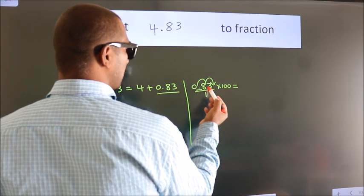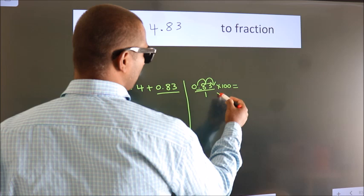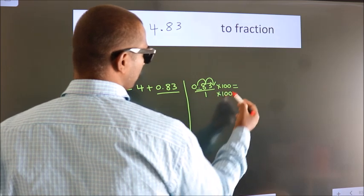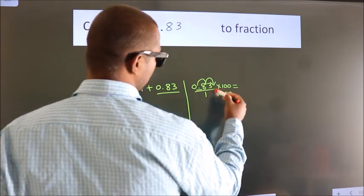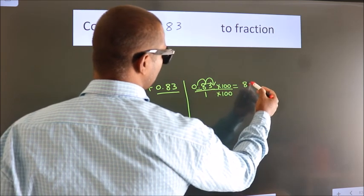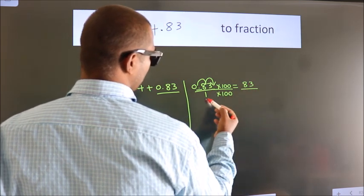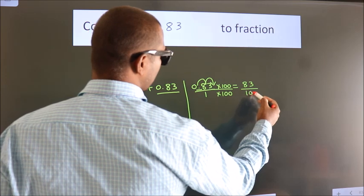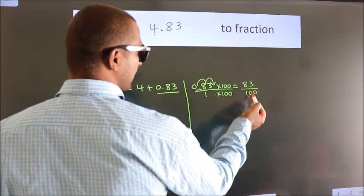Whatever you are multiplying in the numerator, in the denominator also do the same. Next, 0.83 times 100 equals 83. 1 times 100 equals 100. This is the fraction we got.